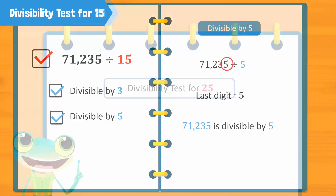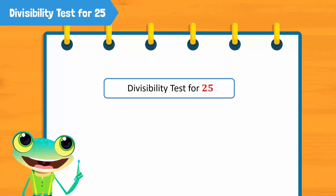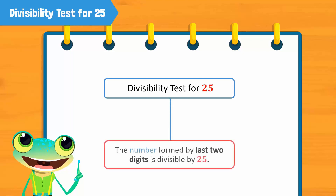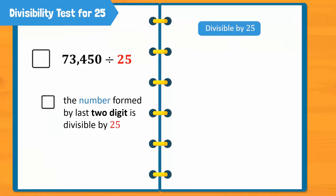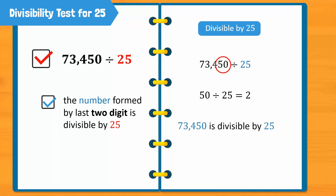Now, let's take a look at the divisibility test for another two-digit number, 25. To find out if any number is divisible by 25, we need to carefully look at the number formed by the last two digits. If the number formed by the last two digits is divisible by 25, that means the entire number is divisible by 25. Is 73,450 completely divisible by 25? The last two digits form the number 50. Since 50 is divisible by 25 — 25 times 2 is 50 — therefore 73,450 is also divisible by 25. Wasn't that quick?